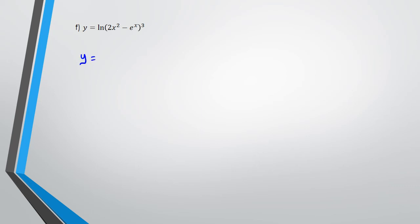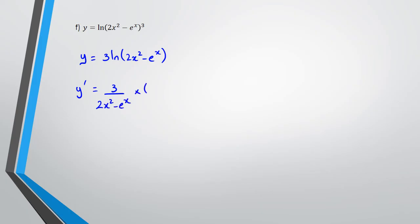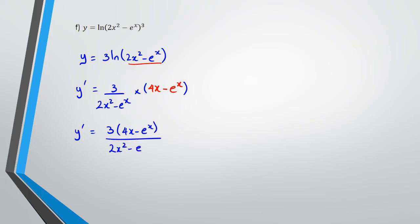For the last question, there are two ways to do this. The easiest way is to apply the log rules, so y can be written as 3 ln(2x squared minus e to the x). Differentiating, we get 3 over (2x squared minus e to the x) multiplied by the differentiation of whatever's inside the bracket. The differentiation of 2x squared is 4x, and the differentiation of e to the x is just e to the x. So the final answer is 3 times (4x minus e to the x), all divided by (2x squared minus e to the x).